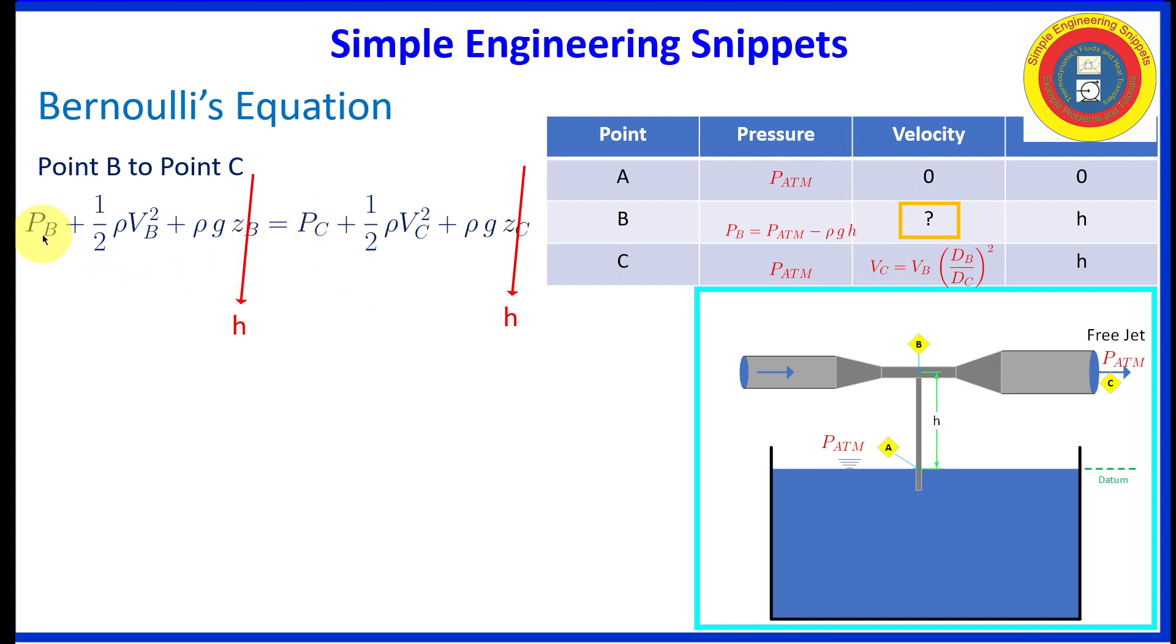And we're going to substitute through this. But we should also know that the pressure at Charlie is at atmospheric pressure. So we'll be using that. And pressure at Bravo, well, we have an equation for that. So we'll be substituting that in. And we have an equation for the velocity at Charlie. So we'll be squaring that and substituting that in.